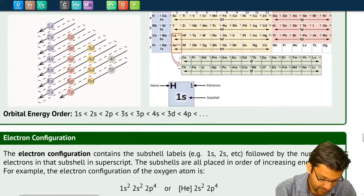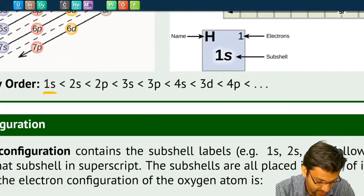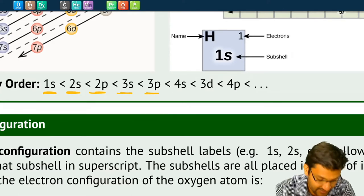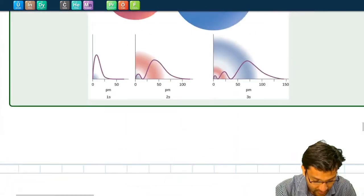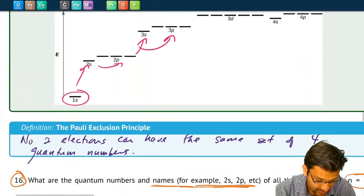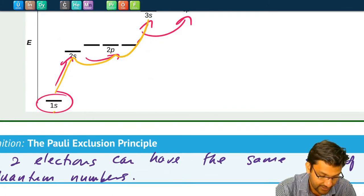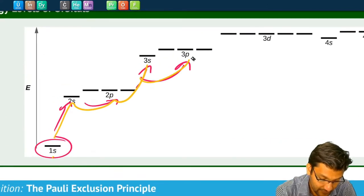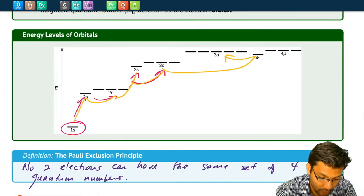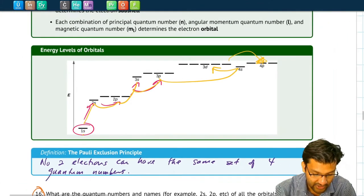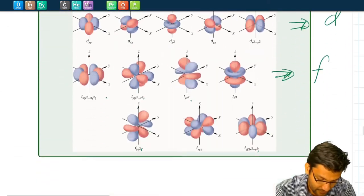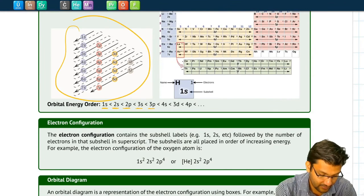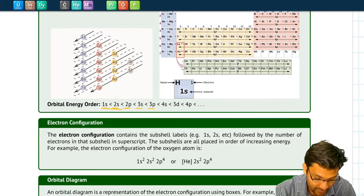Writing it out, the energy order is: 1s, 2s, 2p, 3s, 3p, 4s, 3d, 4p, and so on. There was a diagram earlier in this chapter showing the orbital energies — 1s, then 2s, then 2p, then 3s, then 3p, then 4s is higher than 3p, then 3d, then 4p. But it's easier to remember by constructing the diagonal arrow table than to memorize that diagram. When we fill electrons, we put them in the lowest energy orbitals first: 1s, then 2s, then 2p.